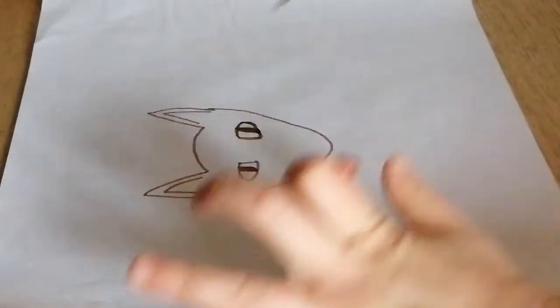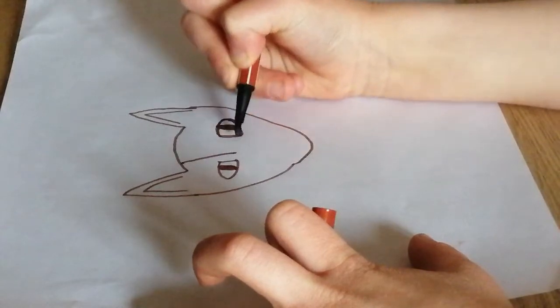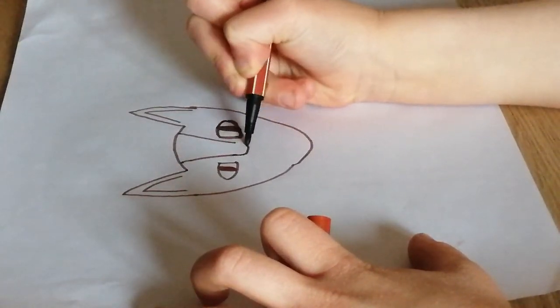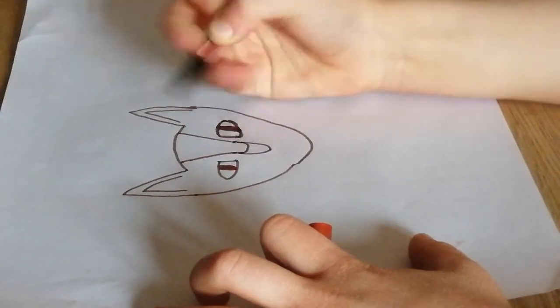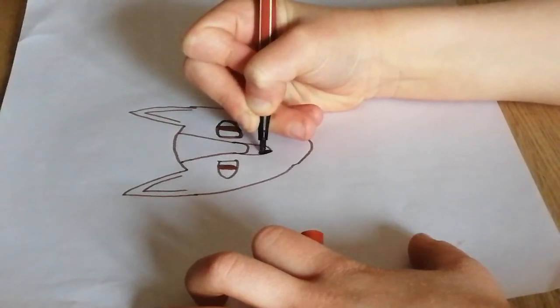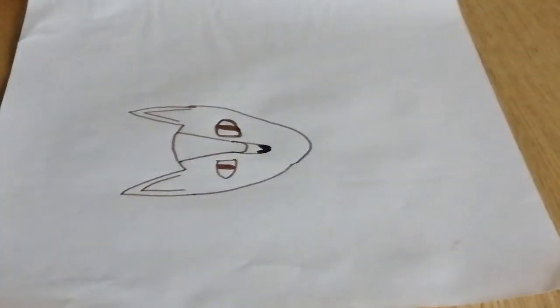Next up we're going to add like a little line like there. This is where the nose is going to come down two sides. Then we're just going to add two little circles.